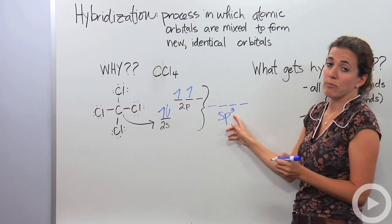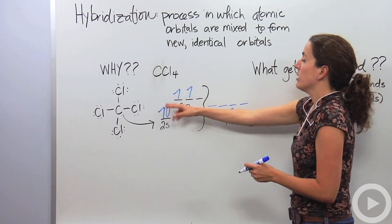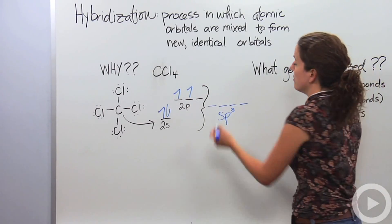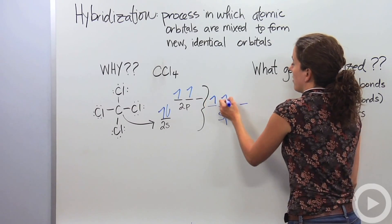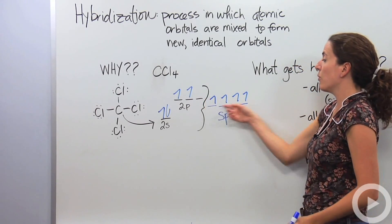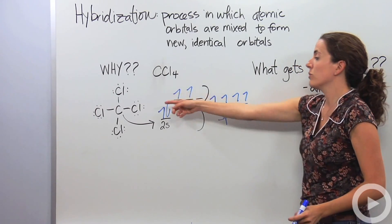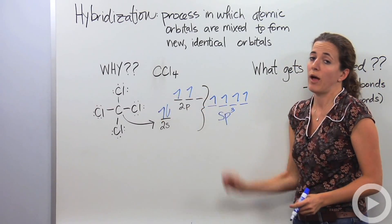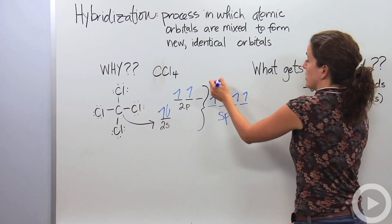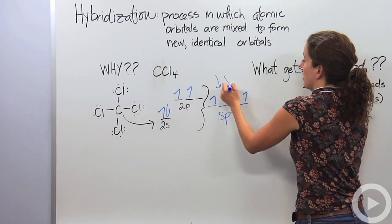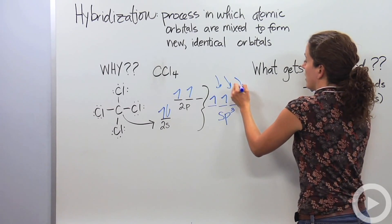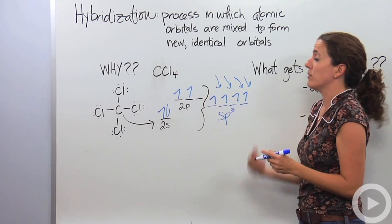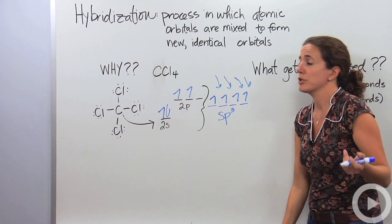One from s, three from p. We spread these out just like Hund's rule tells us to. We have four electrons, which gives us four equal places for chlorine to come in and bond with that carbon. Chlorine can come in here, here, here, and here, making four of those bonds like you see in the picture.